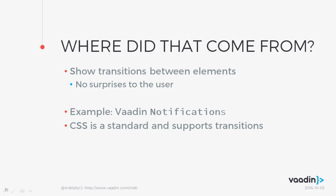This basically means showing transitions between elements. A good example is a Vaadin notification — it's not jumping at you from the middle of the screen; it transitions from a corner with an animation. So you're not surprised that you've seen the notification. It's always nice to use applications with animations and fading, as it gives this pleasant feeling that things are nicely thought out.